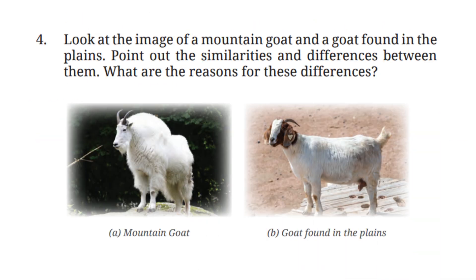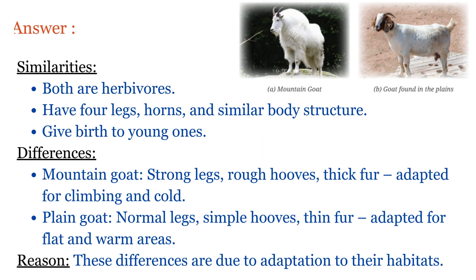Let's read question number 4. Look at the image of a mountain goat and a goat found in the plains. Point out the similarities and differences between them, and what are the reasons for these differences? The similarities between a mountain goat and a plain goat are: both are herbivorous, have four legs, horns, and similar body structure, and both give birth to young ones.